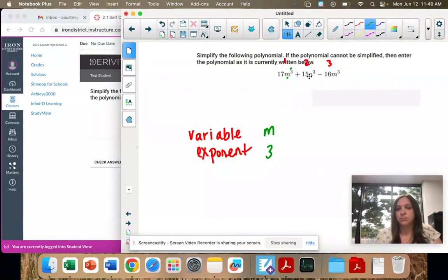Second term variable is n, exponent is three. Third term variable is m, exponent is three.